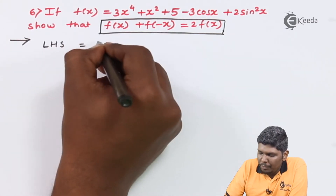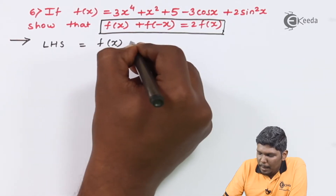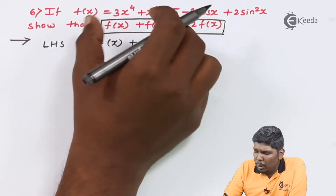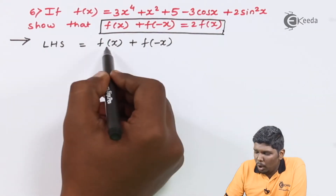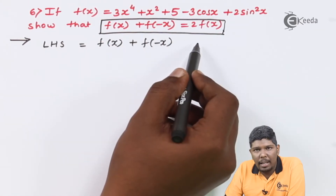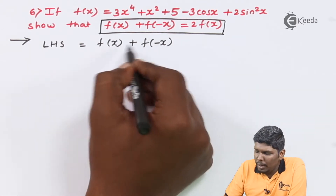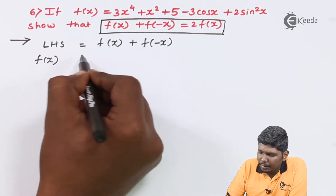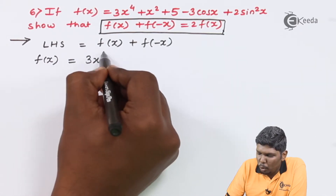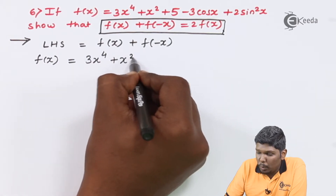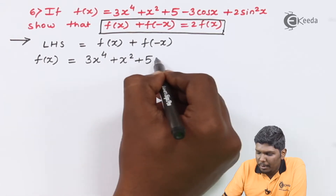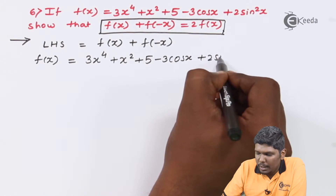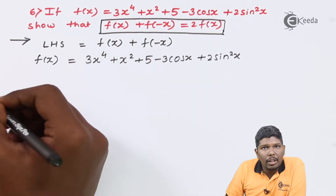So LHS we have f(x) plus f(-x). If the equation is too lengthy, you can solve f(x) and f(-x) separately and then substitute in the LHS. Here we are going to do the same. First we'll write f(x), that is 3x raised to 4 plus x squared plus 5 minus 3cos(x) plus 2sin²(x).